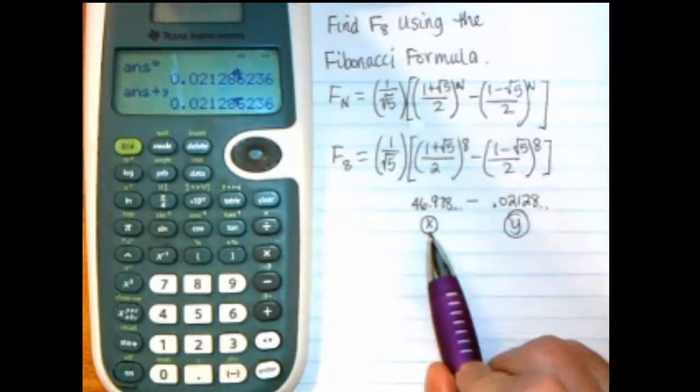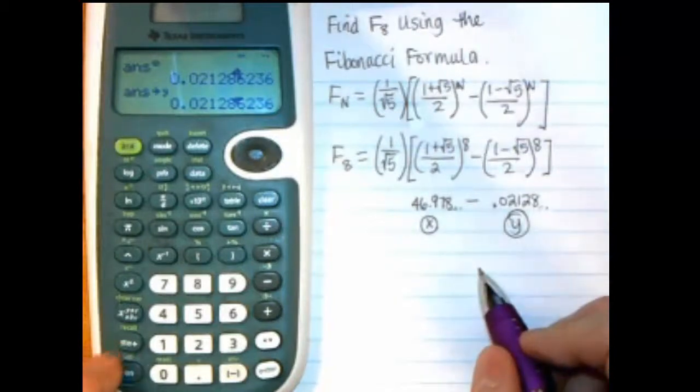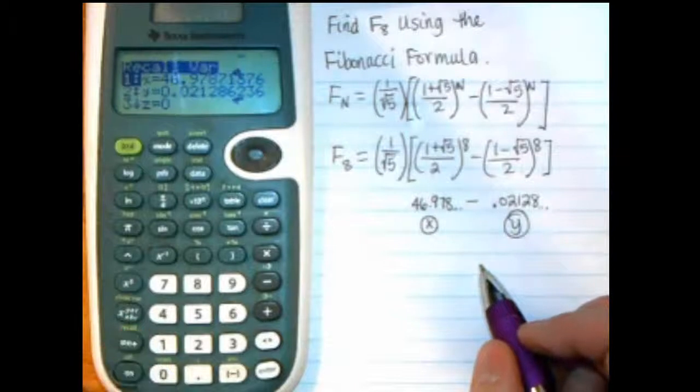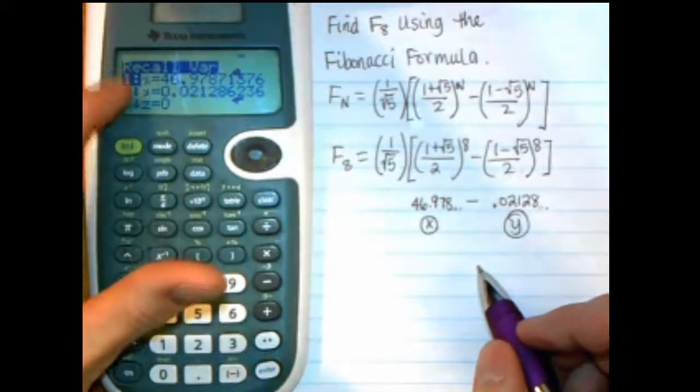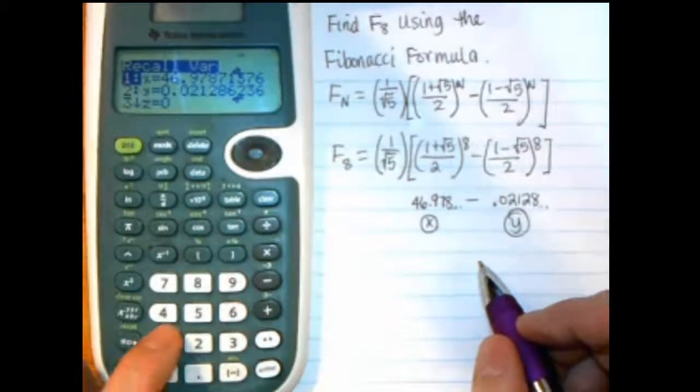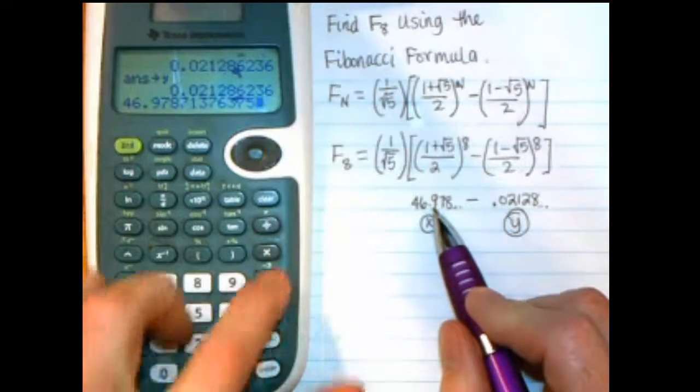Now I need to do what's in X minus what's in Y. So I'm going to do recall, which I can say I can get by second, store button. And it's showing me now my variables and which one's where, so it's really easy to use this store feature. So I do 1, and it takes that number that I had here, and now I say minus.